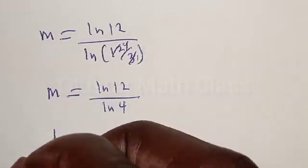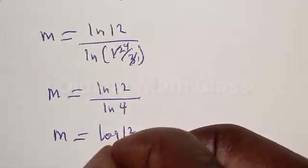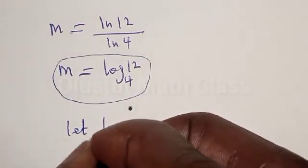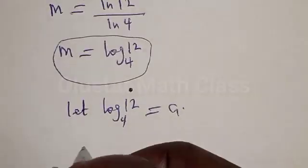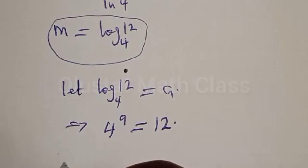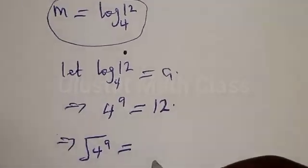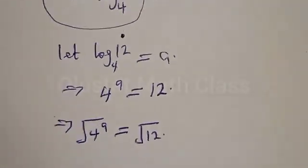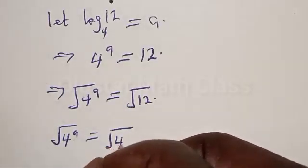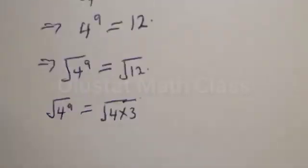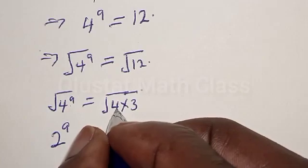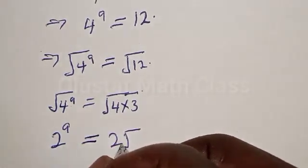This simplifies to m is equal to natural log of 12 over natural log of 4, which can be rewritten as m equals log base 4 of 12. Let log base 4 of 12 equal to a. This means 4 raised to power a equals 12. Now let's take the square root of both sides: square root of 4^a equals square root of 12. Square root of 4^a is 2^a, and square root of 12 equals square root of 4 times 3, which is 2 root 3.